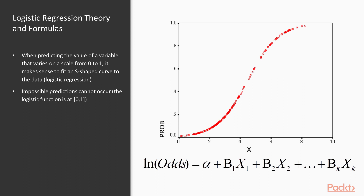What we really need is a function that is not a straight line, but one that captures the values for people that have no heart attack and for those that do. Let's say we're predicting whether someone has a heart attack based on cholesterol level. Those with low cholesterol would not have a heart attack, so you'd see a lot of values at zero, and those with high cholesterol might have a heart attack, so values at one. The S-shaped logistic curve captures that data very nicely, fitting values of 0 and 1, and because of that, you're not going to end up with impossible predictions since a logistic function only has values that go from 0 to 1.